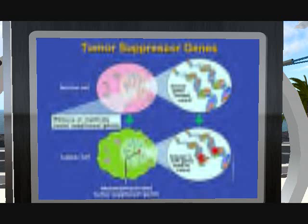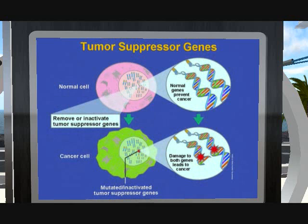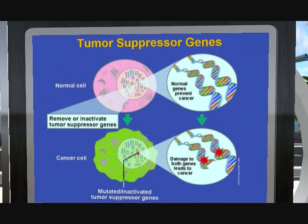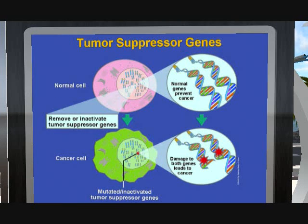All genes whose proteins are involved in the checkpoints of the cell cycle belong to the so-called tumor suppressor genes — those genes whose proteins have the role to prevent the uncontrolled growth which is the main feature of a tumor cell.